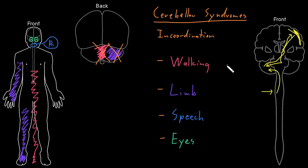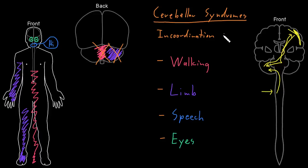Importantly, cerebellar dysfunction won't give you weakness, and you won't get any motor neuron signs — either upper or lower — because the cerebellum doesn't talk directly to muscles itself. It only talks to other parts of the nervous system that communicate with muscles through the upper and lower motor neurons. So these are abnormalities of movement that don't involve weakness; instead, there's incoordination — movements that are clumsy, not smooth, or inaccurate, and the movement may not hit the target as intended. Dysfunction of the cerebellum itself or its connections can produce all of these syndromes.